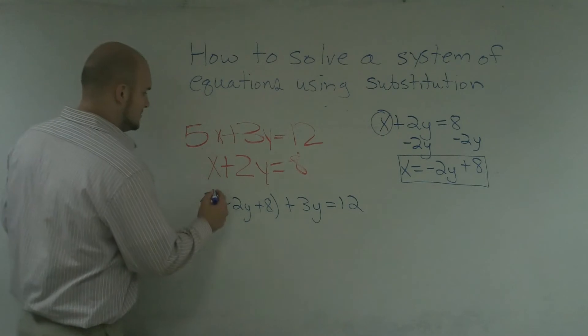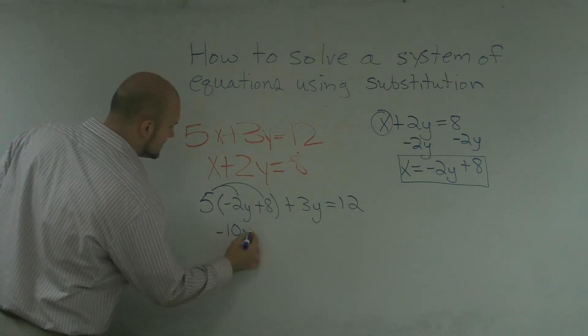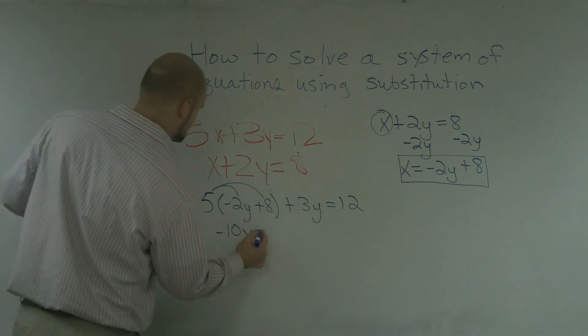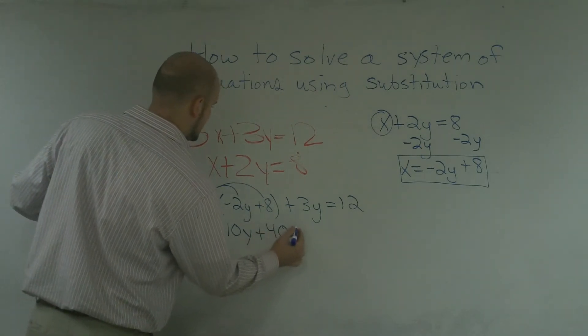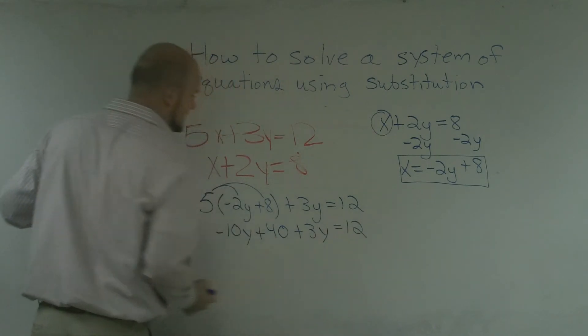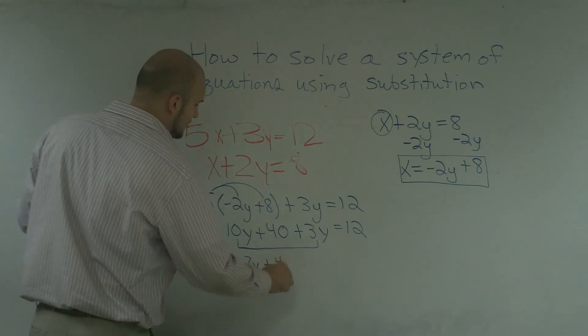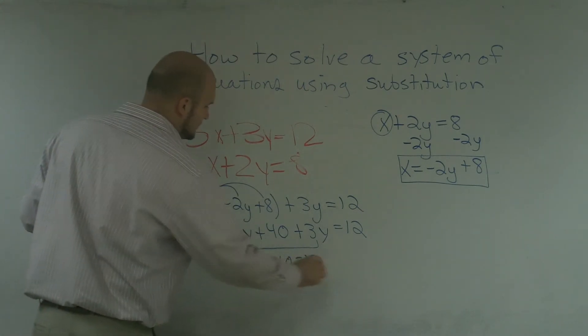I'll do my distributive property. I get a negative 10y plus 40 plus 3y equals 12. Now, I need to combine my like terms. I notice these both have a y in them, so I get a negative 7y plus 40 equals 12.